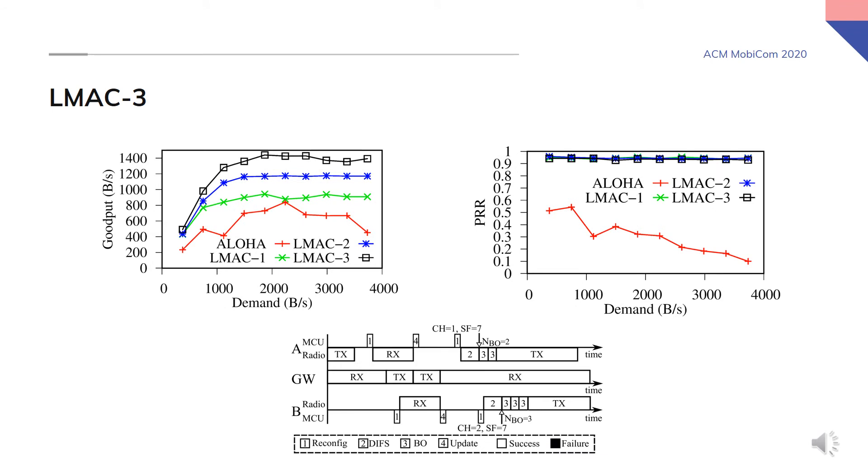And in LMAC-3 we consider a feedback channel similar to that available in LoRaWAN class B. A LoRa gateway oversees the network as a whole and therefore knows global view of channel utilizations. Here the gateway provides nodes with helpful information which leads to further improved network performance.